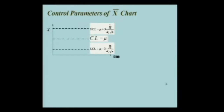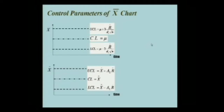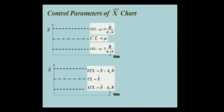So let's look at the control parameters of the X-bar chart first. We have a center line that is mu, and an upper and lower control limit at a distance of three times R-bar — the average of the ranges — divided by a constant times the square root of N. The square root of the sample size determines how far the upper or lower control limit will be from the center line. For the X-bar chart, we can simplify all of this by calling it A2 times R-bar. So the upper control limit is the overall average plus A2 times R-bar, and the lower control limit is the overall average minus A2 times R-bar.